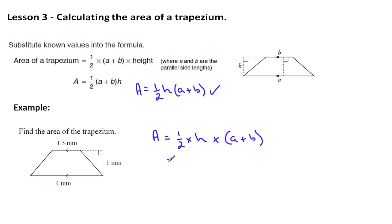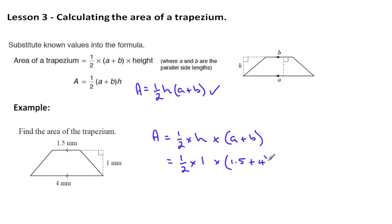Let's substitute in our formula all the numbers that we know. Our height here is 1 millimetre — that's the distance between the two parallel sides. A is 1.5, plus B is 4. Now let's just double check that all the units are in the same form: millimetres, millimetres, and millimetres. Sometimes they get mixed up in a question.